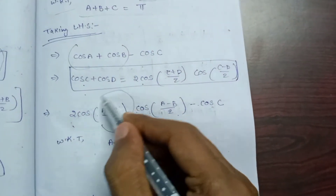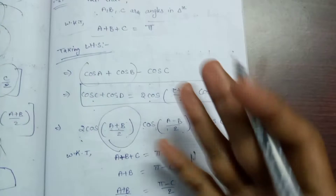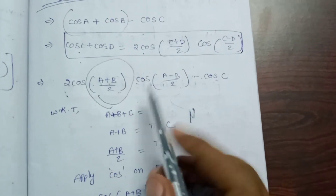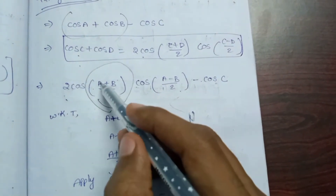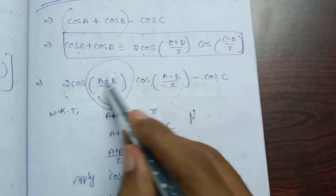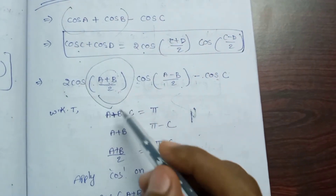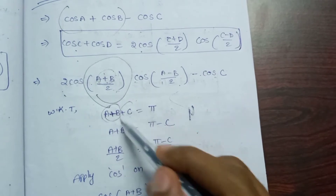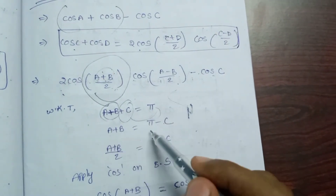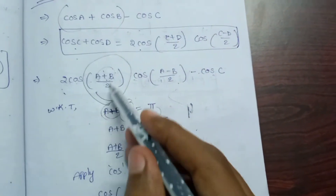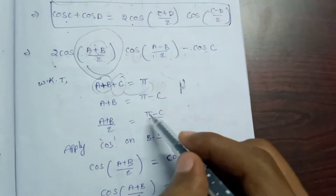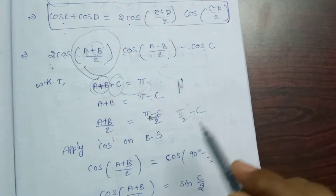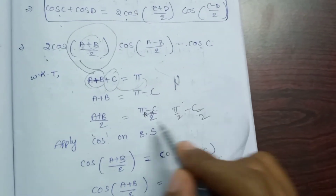We use the condition that A plus B plus C is equal to π. We want to change cos((A+B)/2). Since A plus B plus C equals π, we get A plus B equals π minus C. Dividing by 2, (A+B)/2 equals (π minus C)/2.